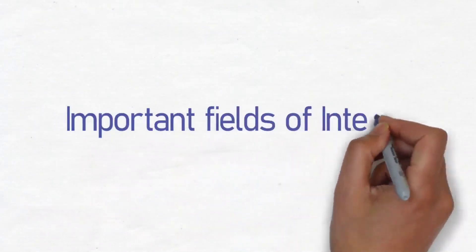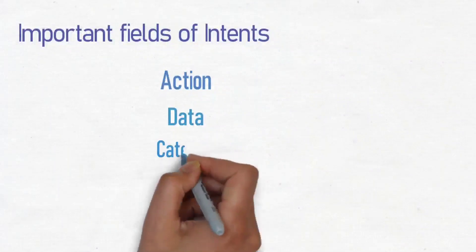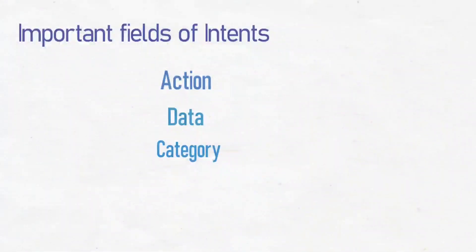The mandatory part of an intent object includes the action — what action to perform, such as view or launch — and the data, which adds a data specification to an intent filter. The third part is category, which is an optional part of intent objects providing additional information.